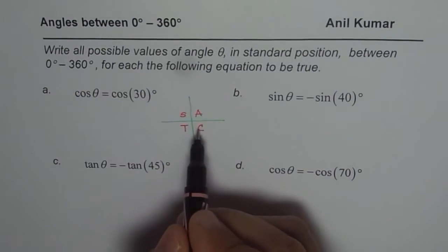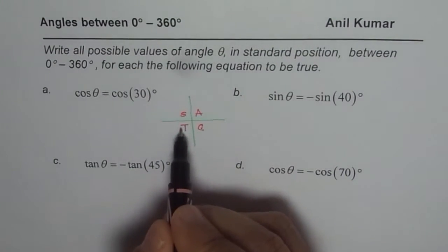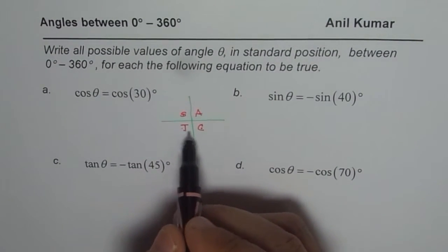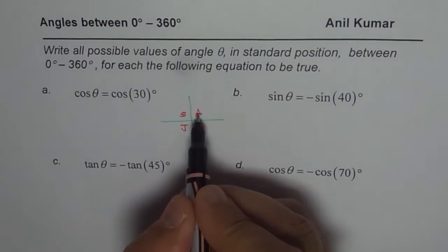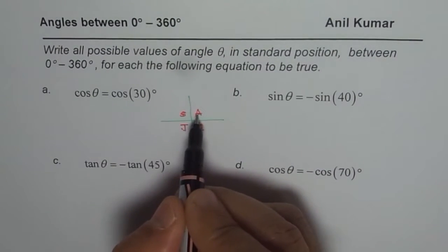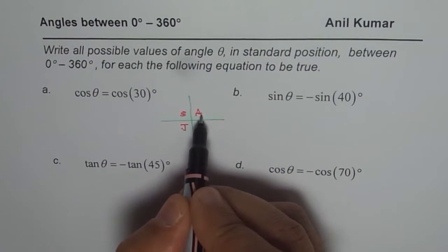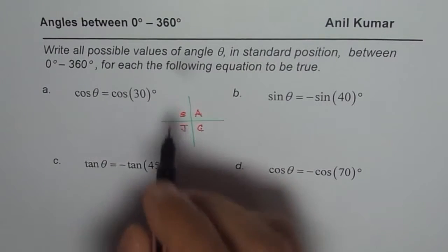So some students learn it by the caste rule, CAST, all silver teacup, all students take calculus. These are different ways of learning this particular rule. So, all are positive, all trigonometric, primary trigonometric ratios are positive in quadrant 1, sine is positive in quadrant 2.